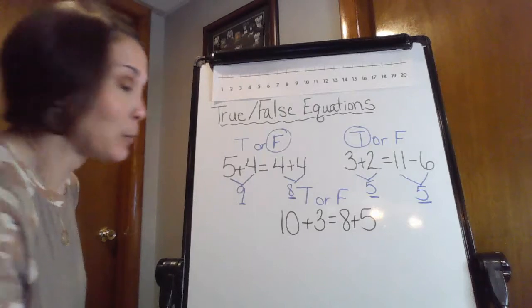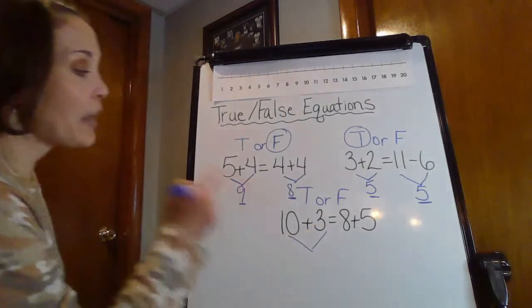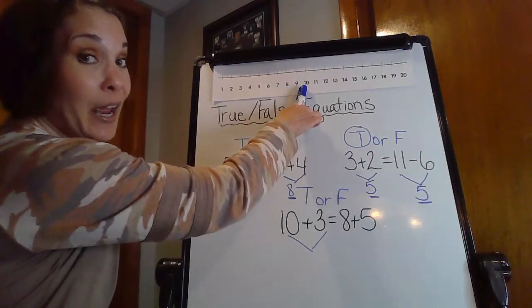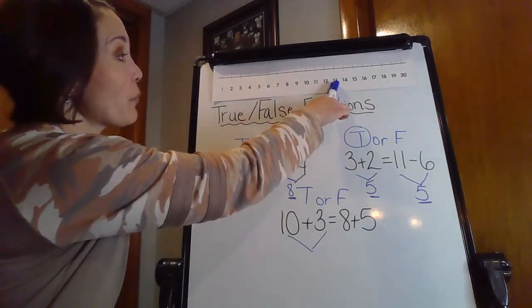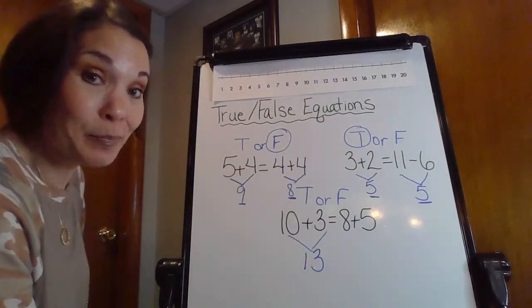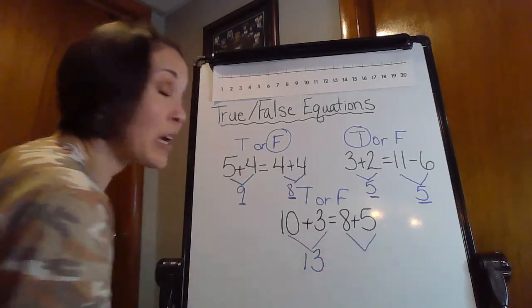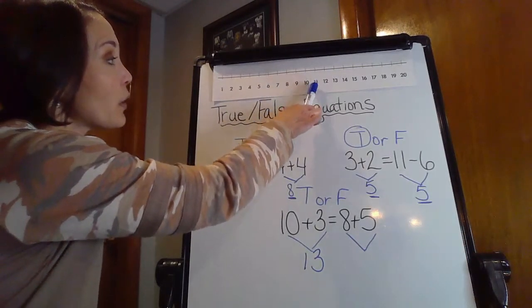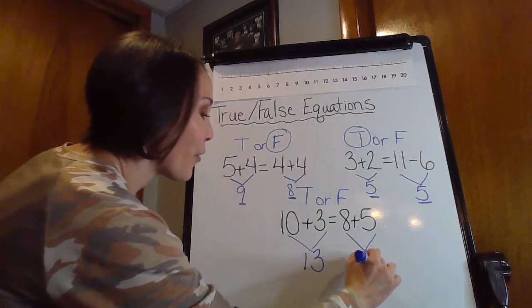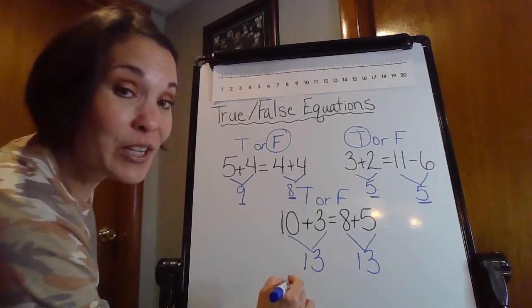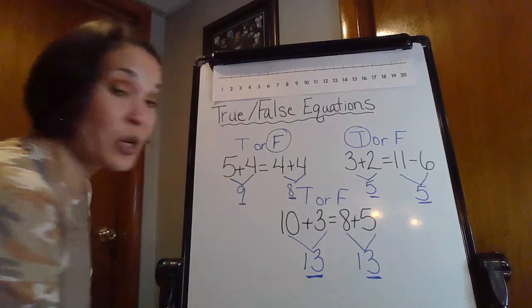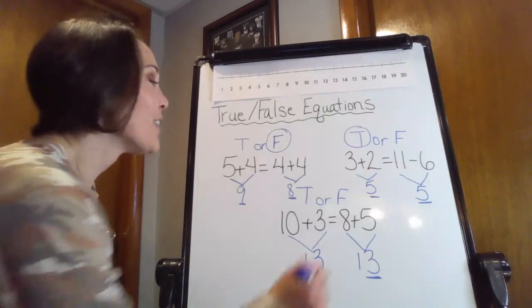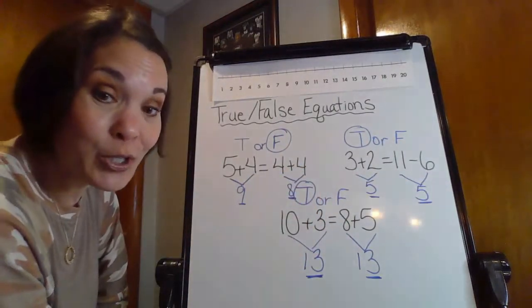So now here's my last one. I have 10 plus three and then I have eight plus five. So let's start with 10 plus three. I'm going to start on 10 and I'm going to add on three more. One, two, three. Oh, I have 13. Now eight plus five. All right. Let's start on my eight and I'm going to count on five more. One, two, three, four, five. Oh, I end on 13 again. So I'm looking at 13 versus 13. Are they exactly the same? They sure are. So you're going to be looking at another true equation.